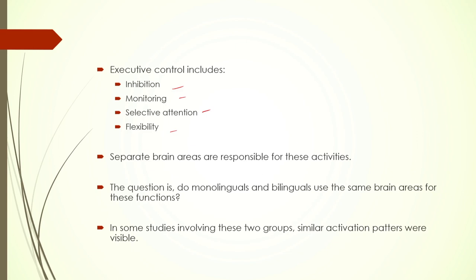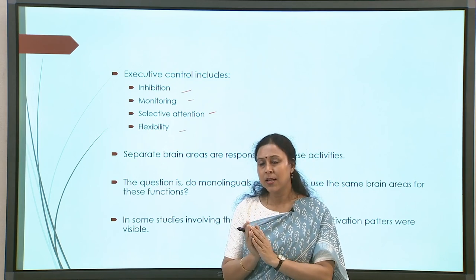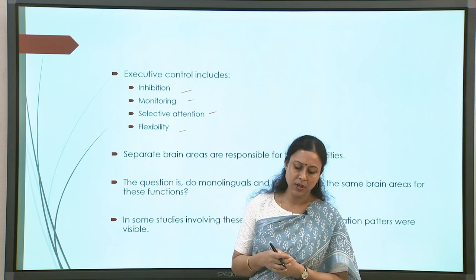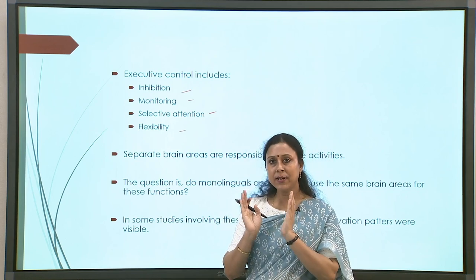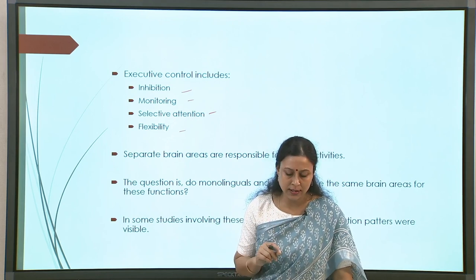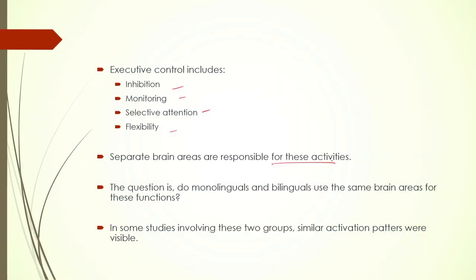What do we mean by conflict monitoring? For example, if I write the word 'blue' in red ink and ask someone to name the color of the ink, they will tend to say 'blue' but the answer should be 'red.' This is a Stroop task. Separate brain areas are responsible for these various activities within executive control. The question is whether monolinguals and bilinguals use the same brain areas or different brain areas for these executive functions.